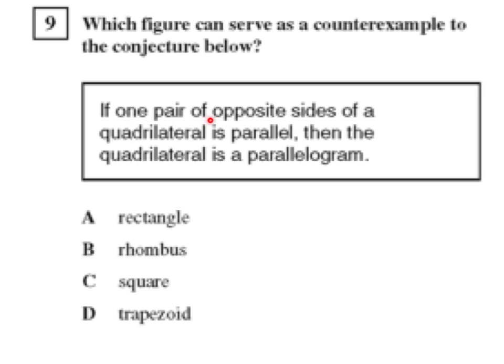If one pair of opposite sides of a quadrilateral is parallel, then the quadrilateral is a parallelogram. We have these choices.